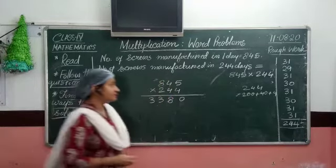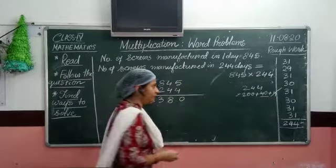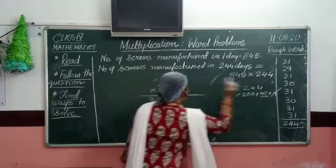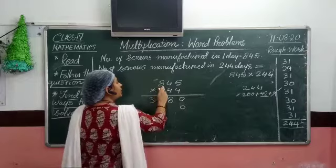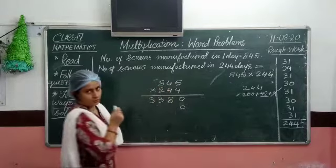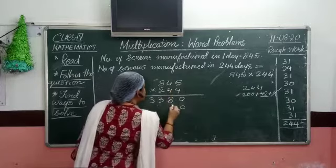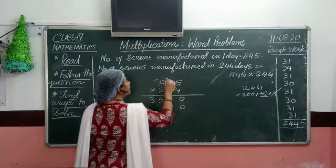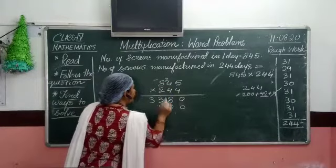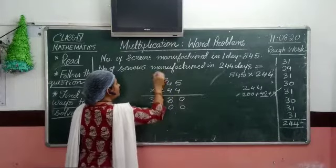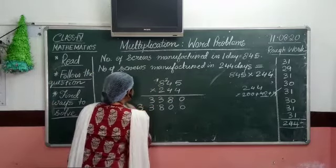Now coming to the second step. We have 4 tens, that is 40, so we put a zero here first. Now 845 multiplied by 4: 4 fives are 20, carry 2. 4 fours are 16; 16 plus 2 is 18, carry 1. And 8 fours are 32; 32 plus 1 gives us 33 again. So this step is done.